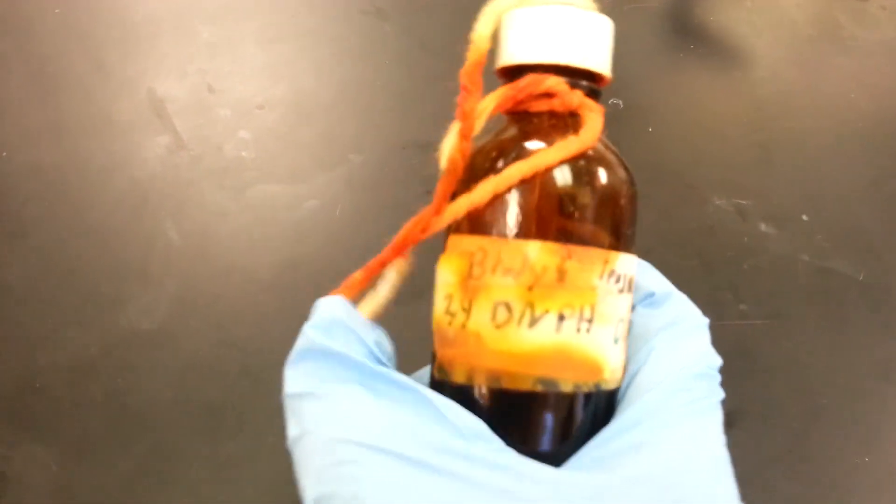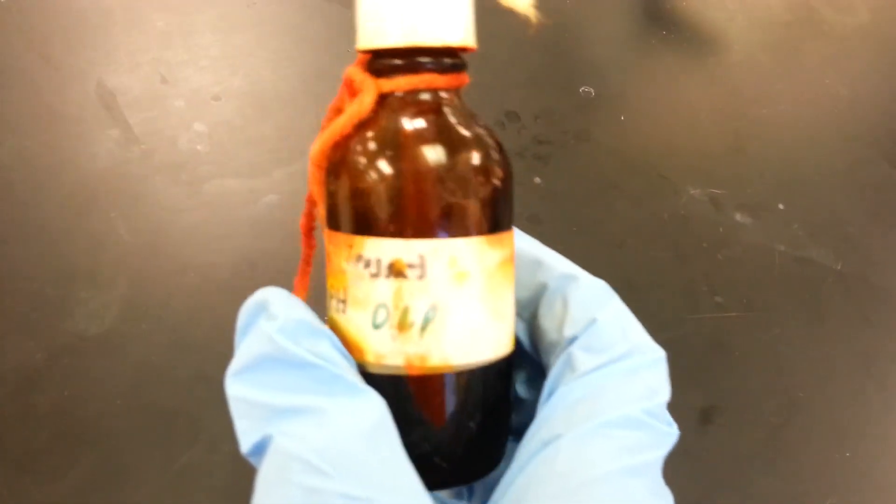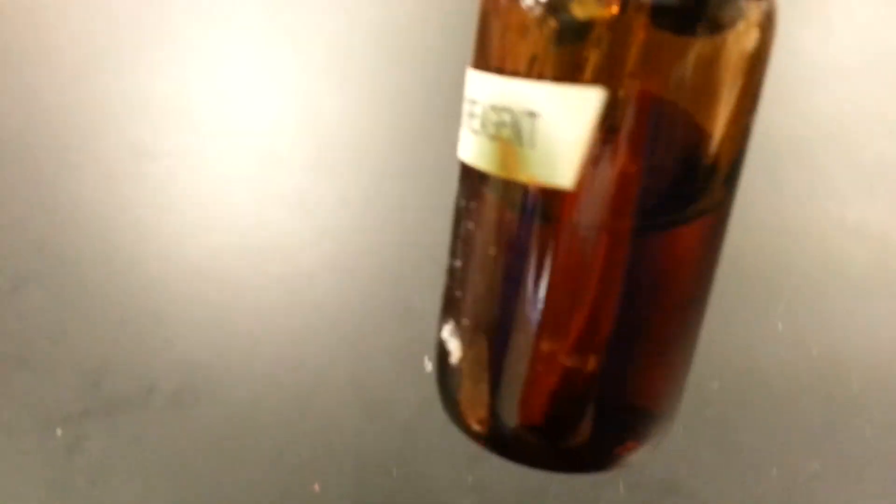As we mentioned, here's the Brady's reagent. The 2,4-DNPH. The bromine and, of course, the Jones reagent. Here's our silver nitrate, glucose, and the chromic acid. Well, that's going to be it for this video.